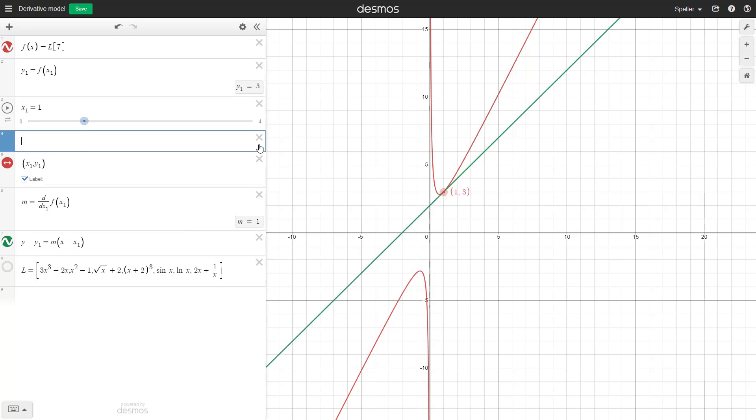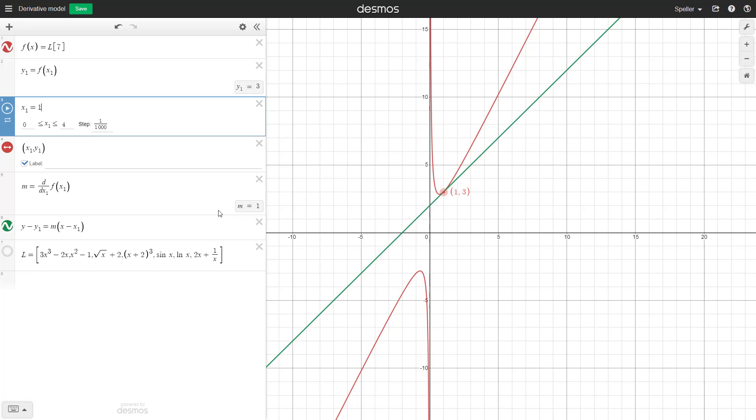Here we see that the derivative or slope at that particular point is 1, and here we have the tangent line. But let's say the question was: what is the equation for that tangent line?